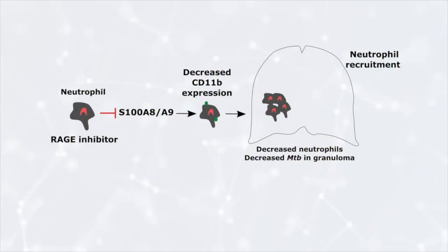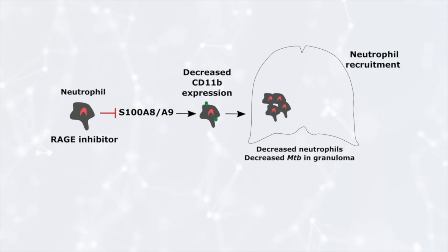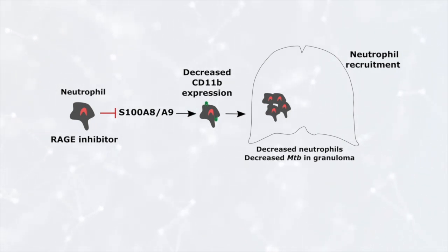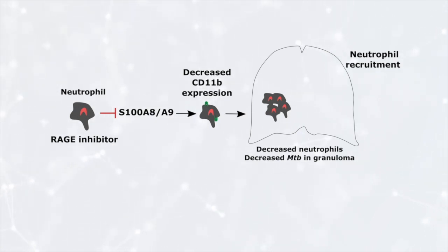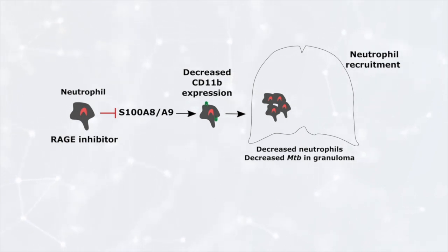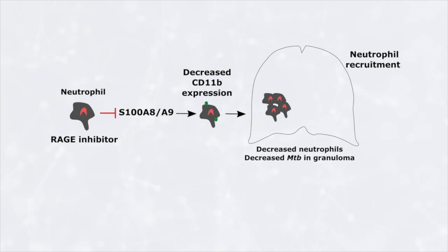These results suggest that measurement of S100A8A9 protein in the serum might be a good indicator of success of TB treatment in human patients. Our study has defined a key role for the protein S100A8A9 in mediating TB susceptibility through the recruitment of neutrophils. Our study also highlights a potential role for S100A8A9 as a biomarker of TB disease progression and TB treatment in human patients.